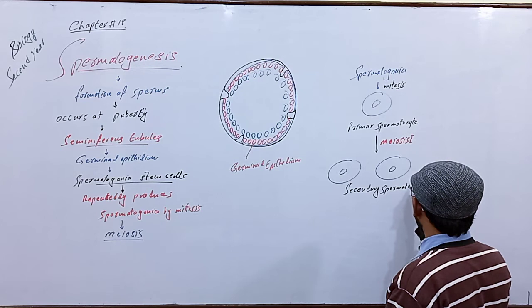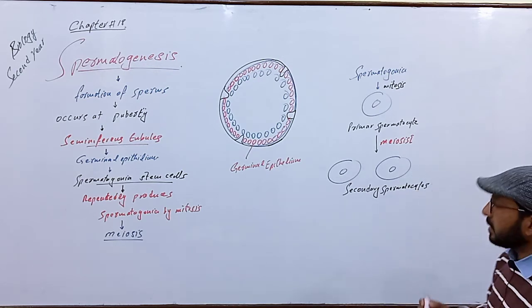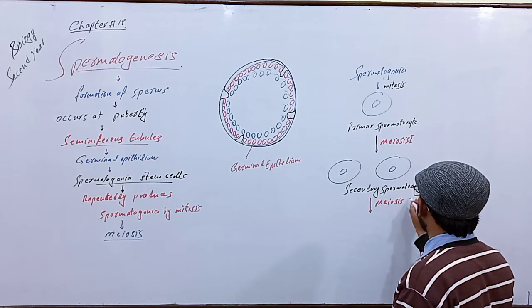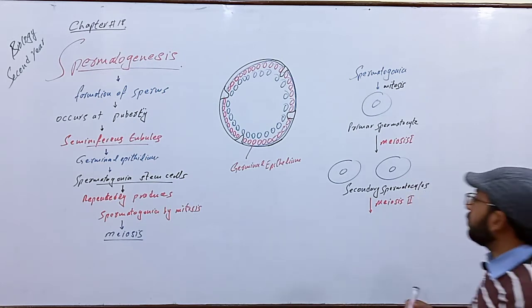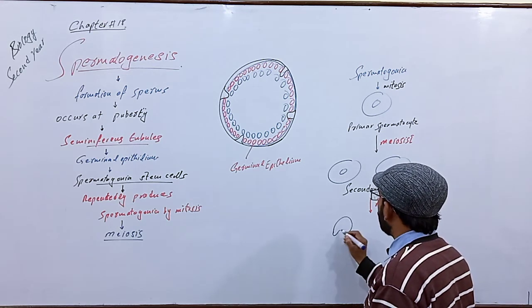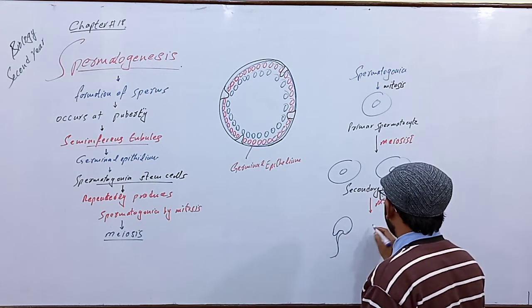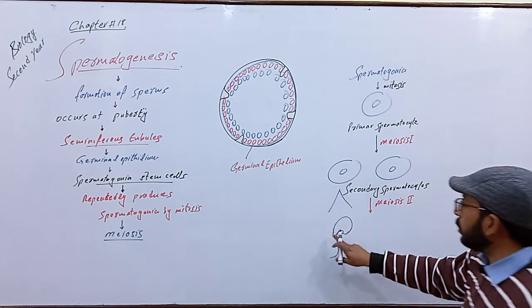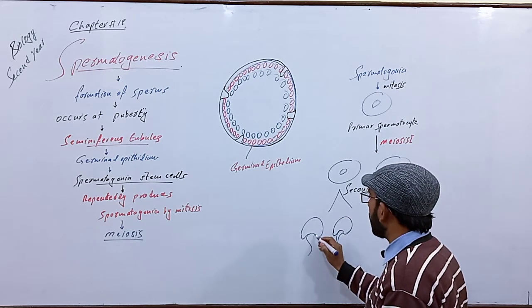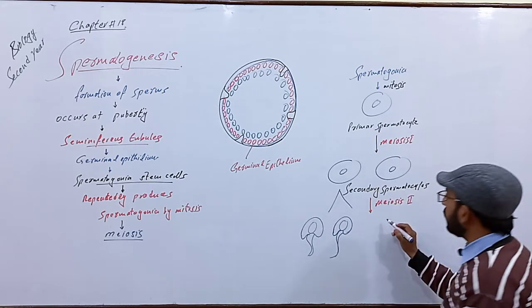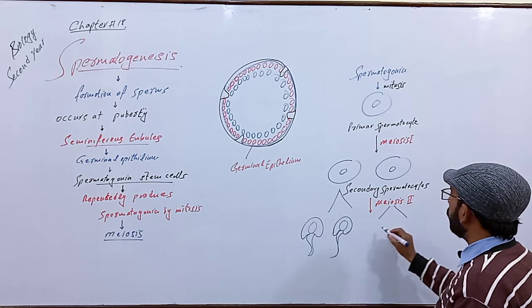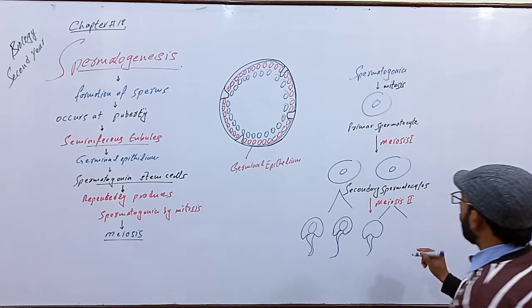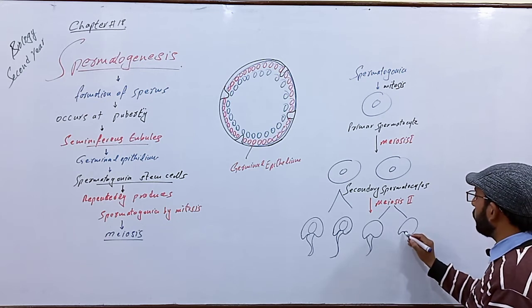These secondary spermatocytes, after the completion of meiosis second, produce the immature sperm that are called spermatids. As a result of meiosis second, each cell produces two spermatids. Similarly, each secondary spermatocyte produces two spermatids by the process of meiosis second.